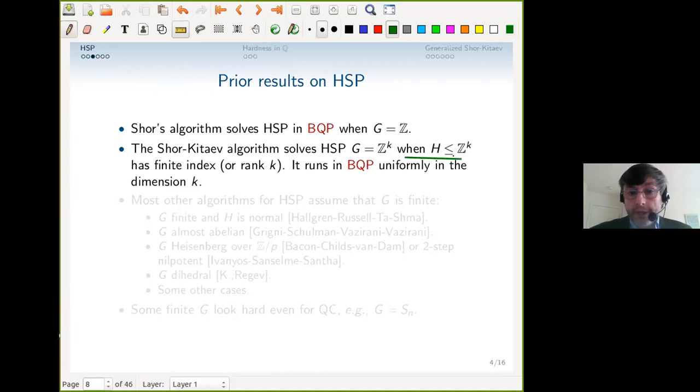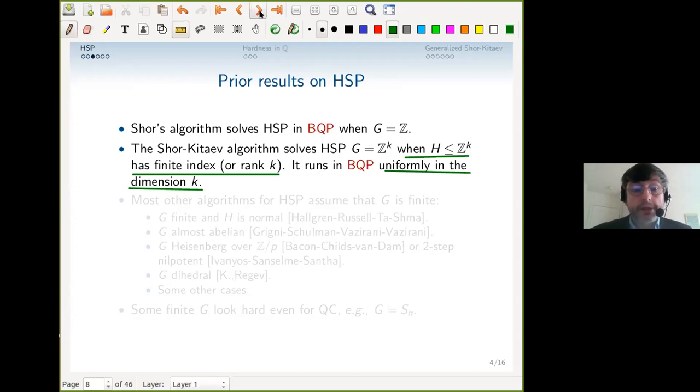There's an extra crucial condition that H should have finite index or full rank. What's important is that it runs in BQP uniformly in the dimension—not just quantum polynomial time for each dimension separately, but jointly as the dimension increases.